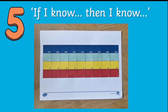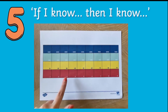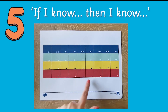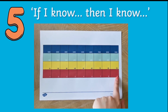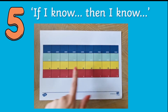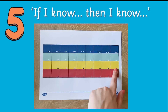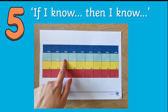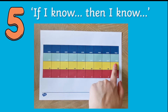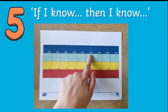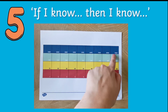Finally, you can use these charts for a game of 'if I know, then I know.' For example, if I know that three plus six equals nine, I also know that thirty plus sixty equals ninety, three hundred plus six hundred equals nine hundred, and three thousand plus six thousand equals nine thousand.